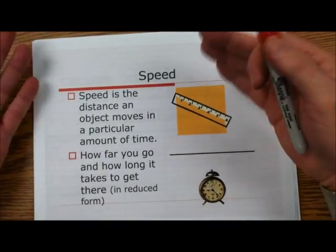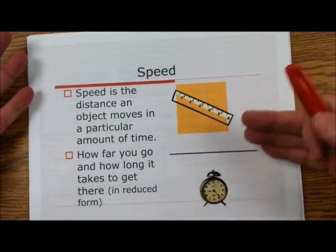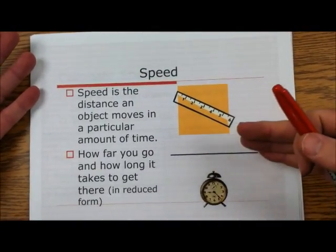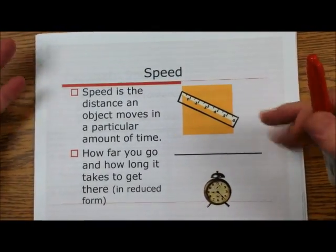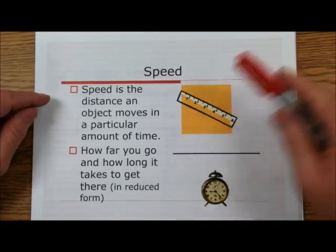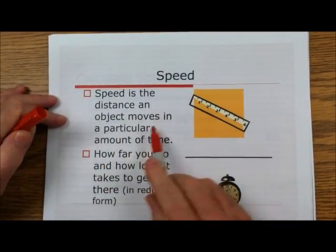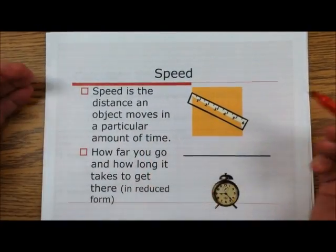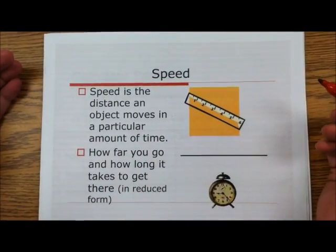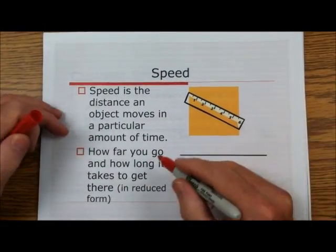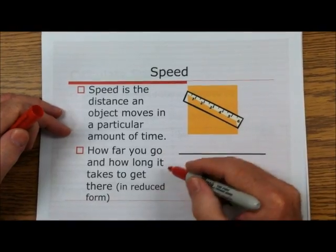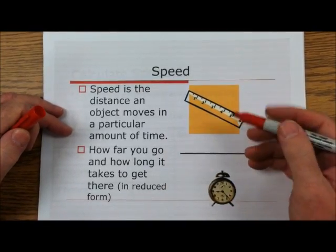Today we're going to talk about speed, and it's got some math in it, so we're going to do some math. Speed is the distance an object moves in a particular amount of time. In other words, how far you go and how long it takes to get there.